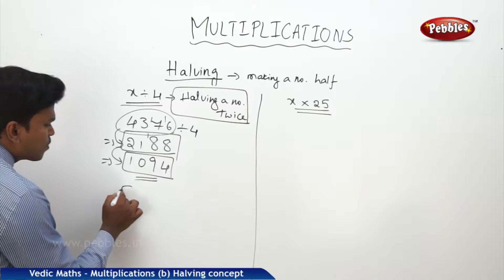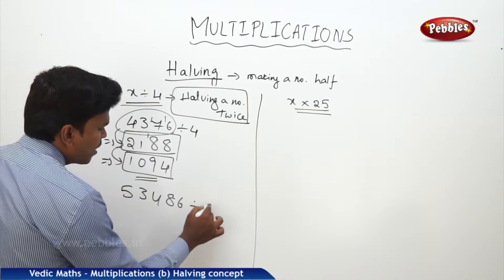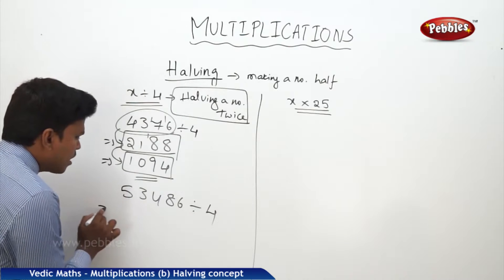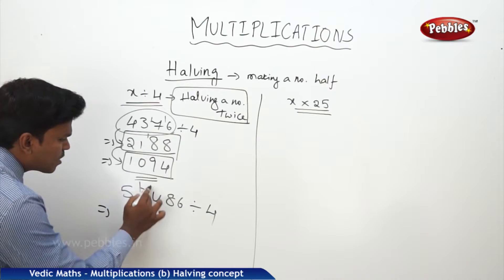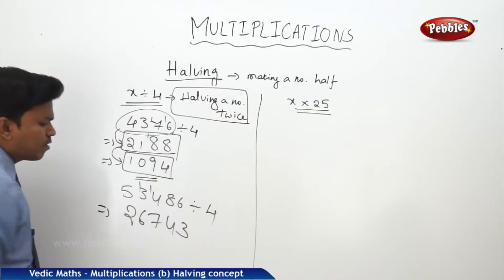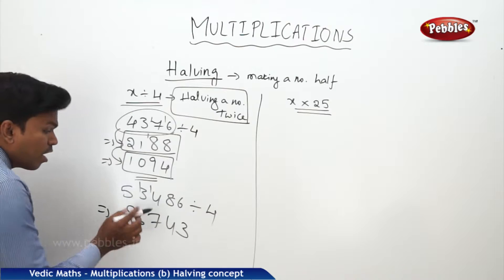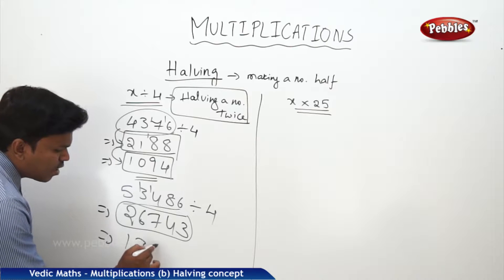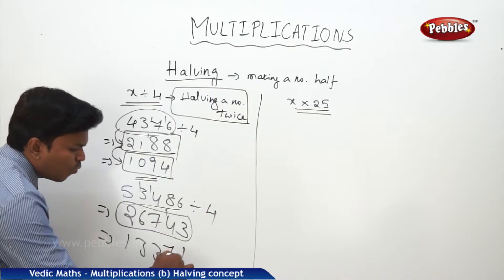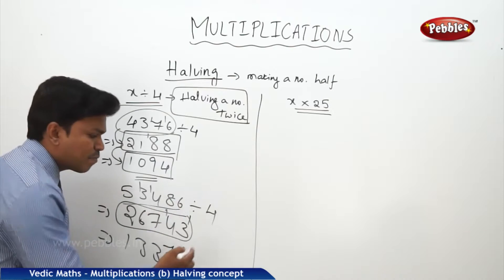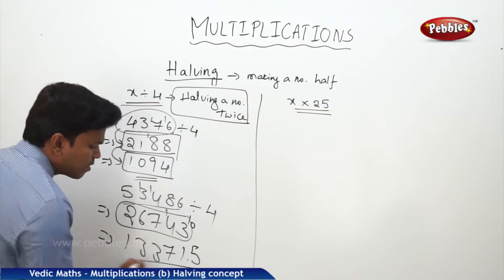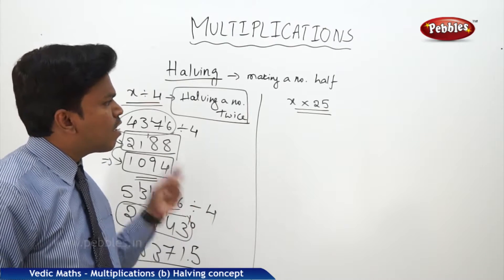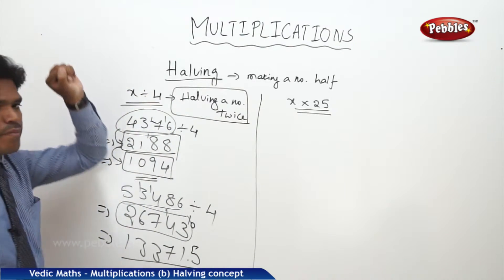One more example: 53486 divided by 4. First make it half: 2, 6, 7, 4, 3. Again make it half: 1, 3, 3, 7, 1 with remainder 1. Since I need the answer in decimal, put a point, add a zero, 2 fives. So the answer is 13371.5. Like this we can apply halving in case of division by 4, which is halving a number twice.